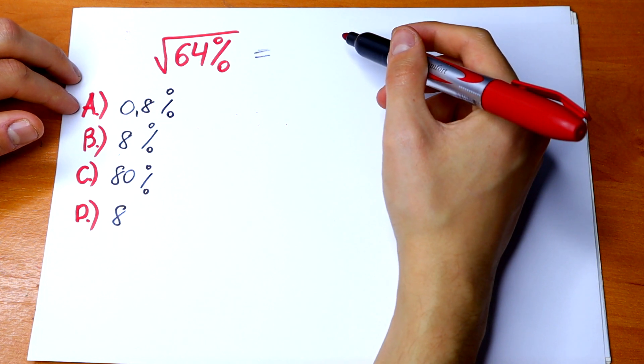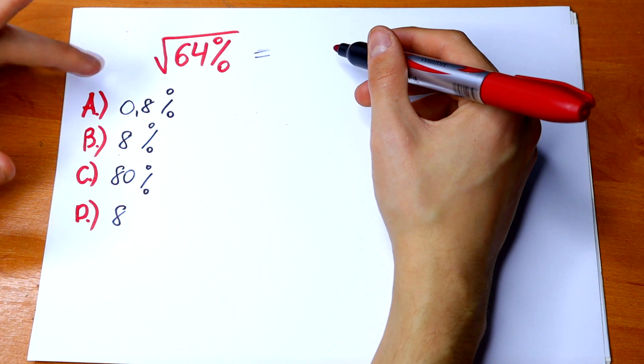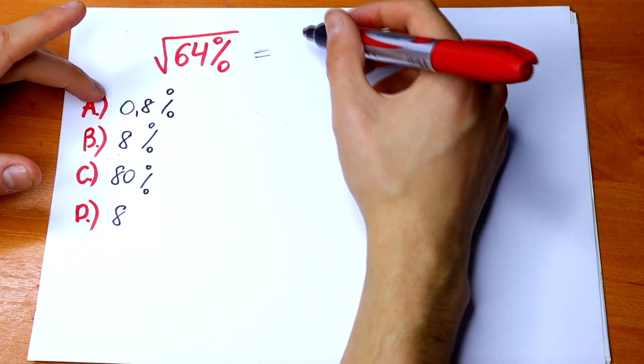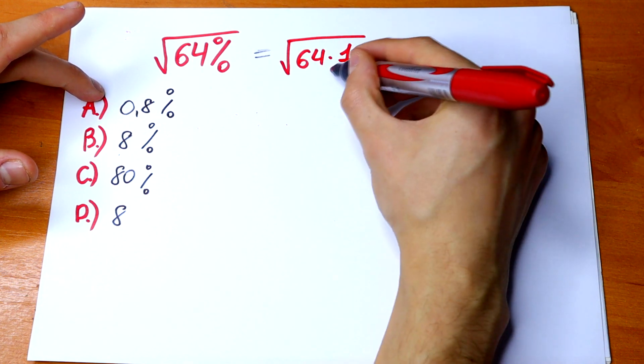We know that 1 percent is 1 out of 100. So we can write 64 percent as square root of 64 times 1 over 100.